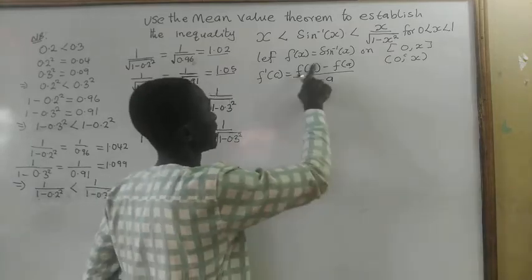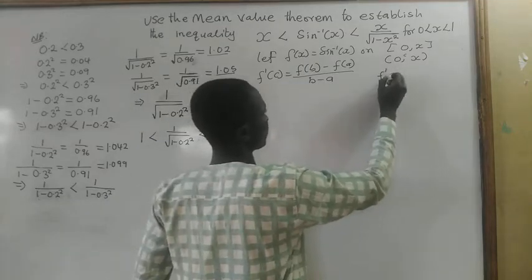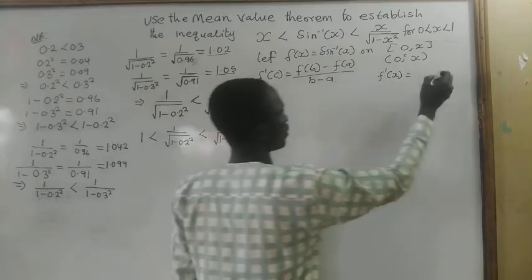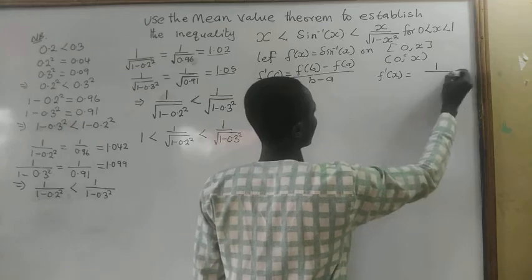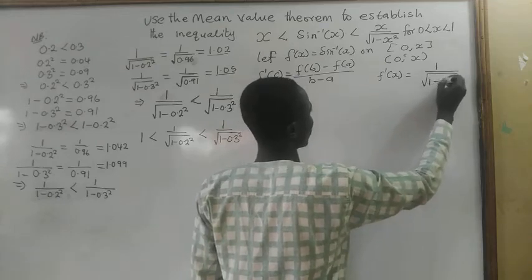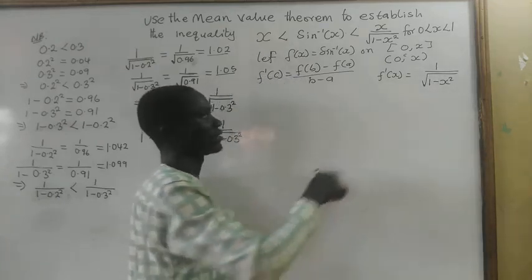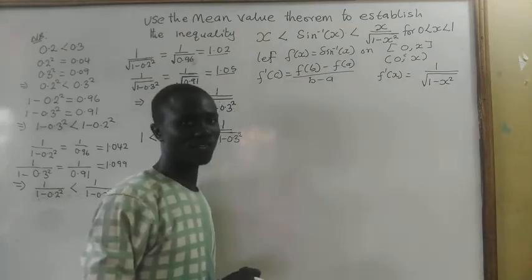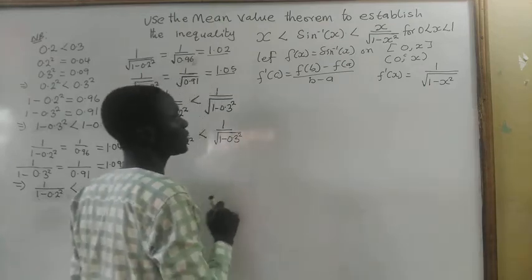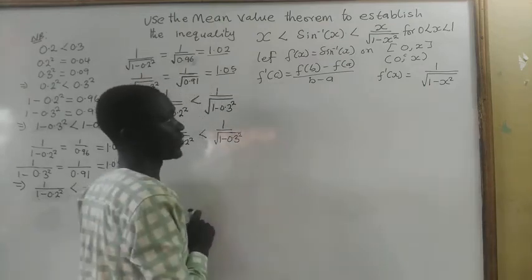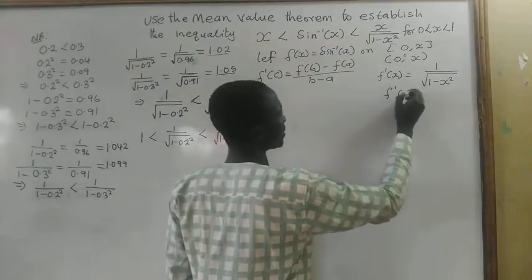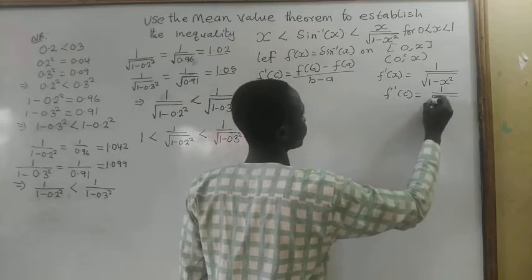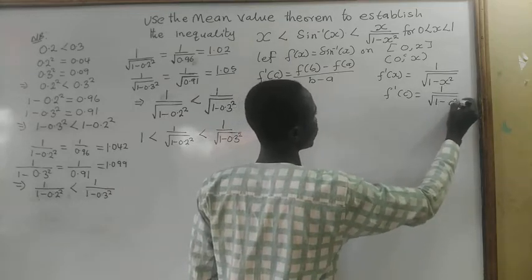Now let's find f prime of x. If we differentiate sin inverse of x, we are going to get 1 divided by the square root of 1 minus x squared. Check the description for the derivative of the sin inverse function. Now let's find f prime of c: f prime of c will be 1 divided by the square root of 1 minus c squared.